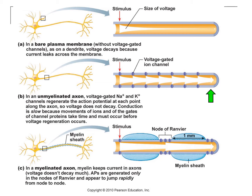In a myelinated axon, the myelin insulates the membrane. Unlike an unmyelinated axon where current can just leak out, there's no leakage of current out because the myelinating cells block those ions from leaking out of the membrane. So sodium entry occurs at the point of stimulus and then diffuses down to the next node of Ranvier.